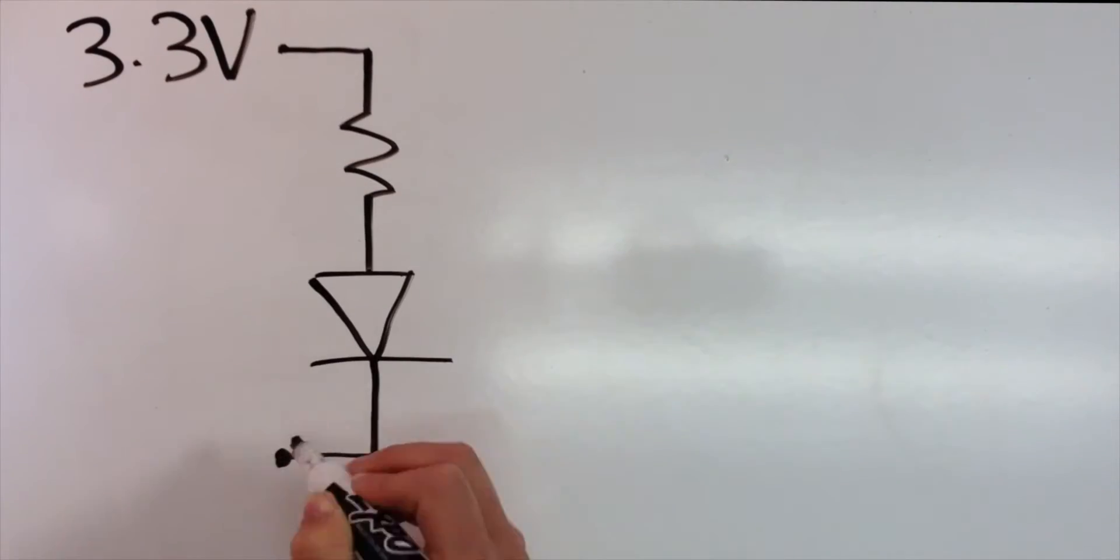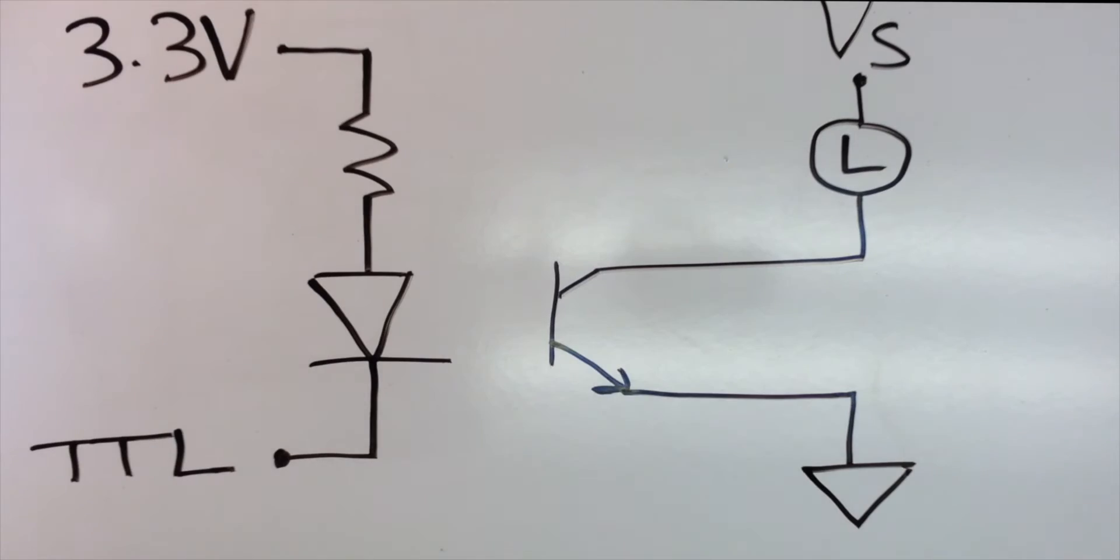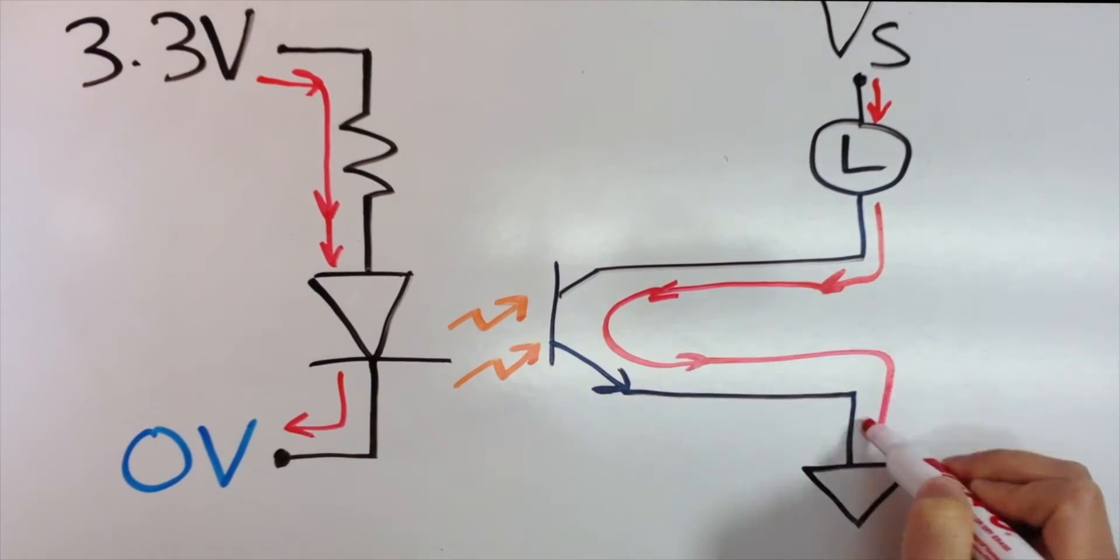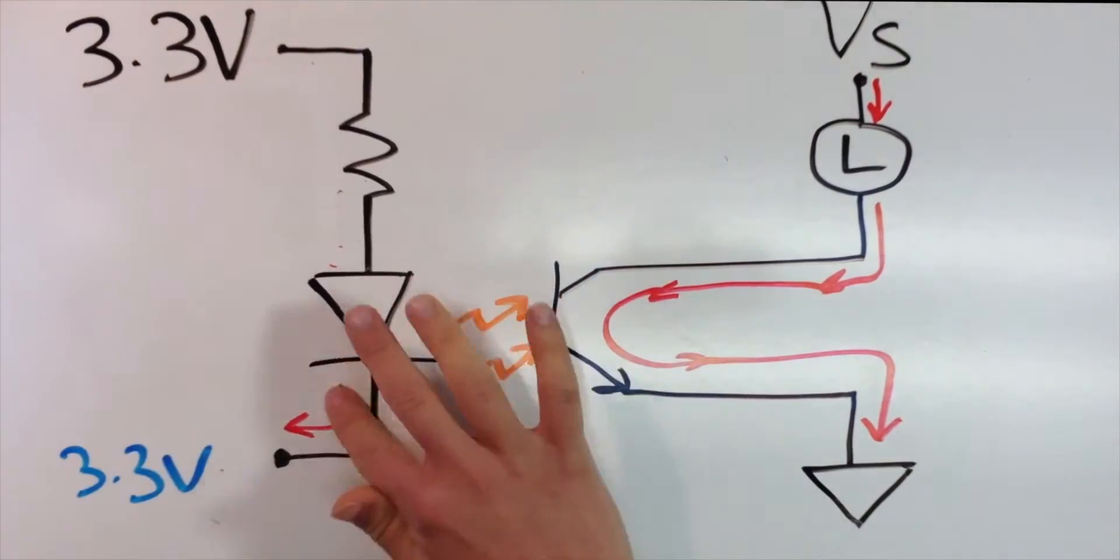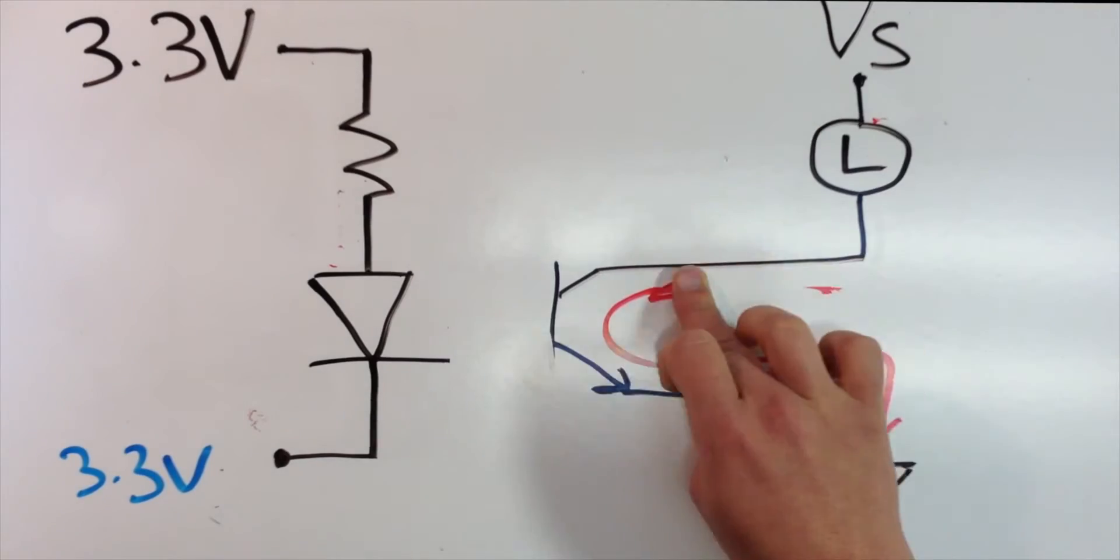The opto-isolator is made up of an emitting diode and an optical receiver. When current flows between 3.3 volts and ground, the diode emits light and turns the receiver switch on. When no current is flowing, no light is emitted and the switch is off.